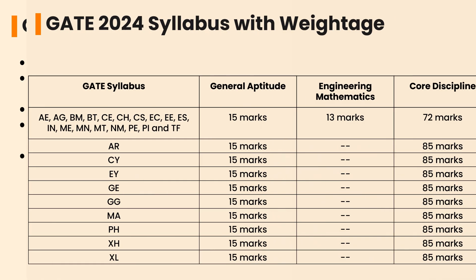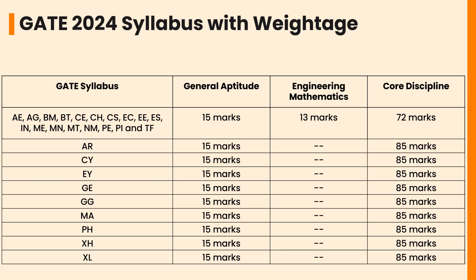Let's discuss GATE 2024 syllabus with weightage. The GATE 2024 syllabus is different for the 29 papers. The syllabus can be mainly divided into two sections: General Aptitude with a weightage of 15 marks, and domain-specific subjects or topics carrying a weightage of 55 marks. However, the syllabus for top branches such as Computer Science, Electrical, Electronics, Mechanical, and Civil Engineering has another section on Engineering Mathematics carrying a weightage of 13 marks.